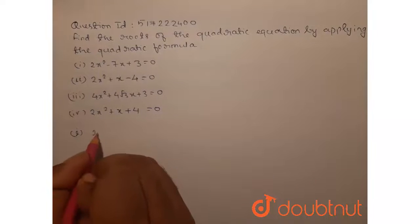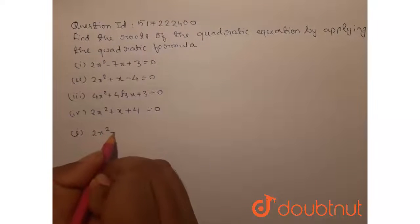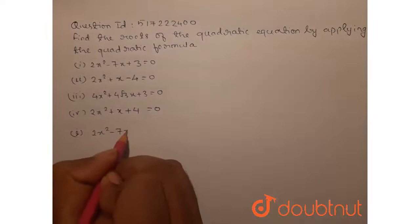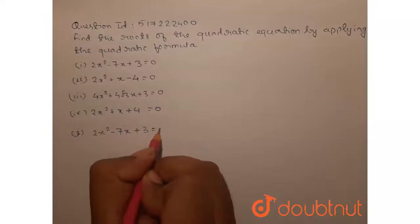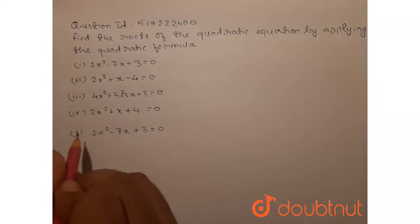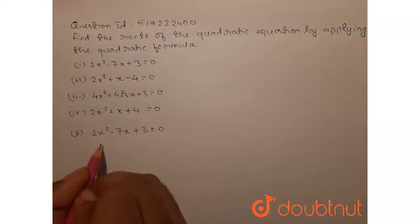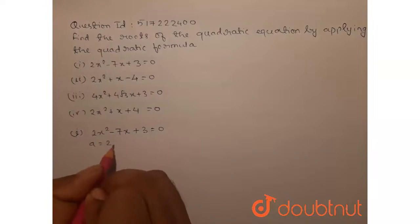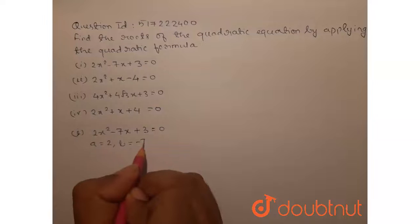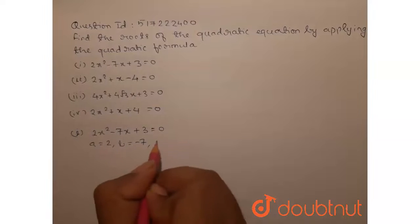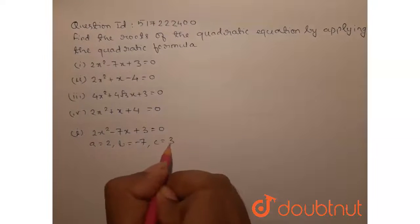We have 2x squared minus 7x plus 3 equals 0. Comparing with the standard equation ax squared plus bx plus c, we have a equal to 2, b equal to minus 7 and c equal to 3.